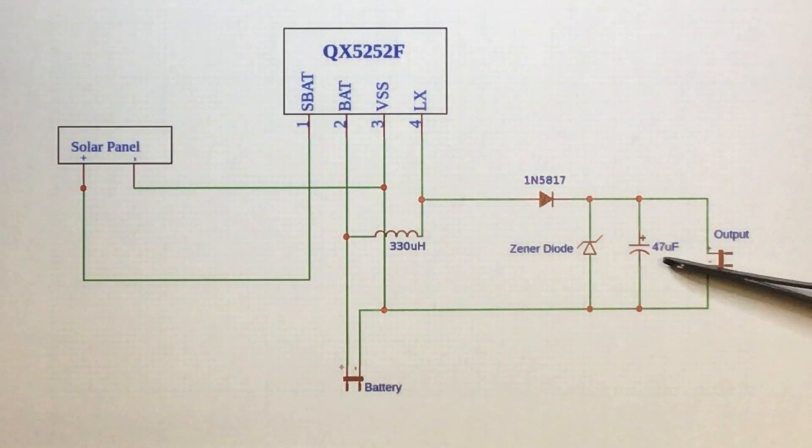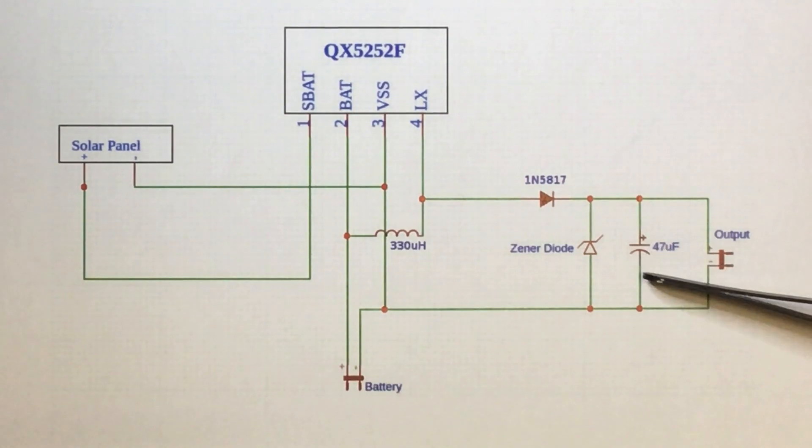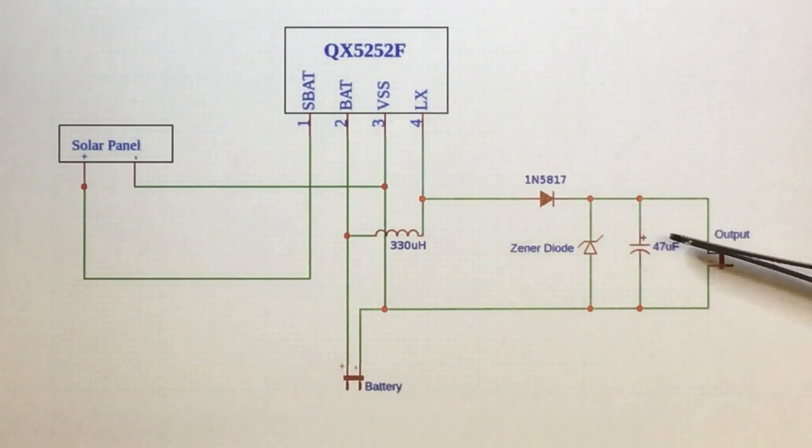Then you've got a 47 microfarad capacitor. I'm actually thinking about maybe doubling that up with 100 nanofarad as well. I'm still tinkering with this. I might even go to something like 100 microfarad with 100 nanofarad, but at the moment and it has been for such a long time, a 47 microfarad capacitor in this location.